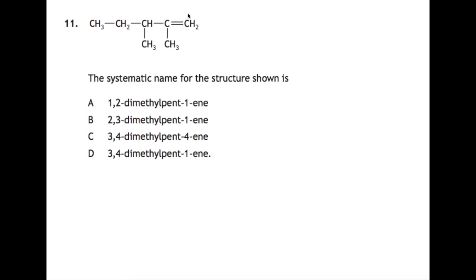So you want to number your chain from the end closest to the double bond. So we have 1, 2, 3, 4, 5 carbons in the longest chain. So this would be pent 1-ene if there was nothing attached to it. But you have these two groups here attached and they are both methyl groups. There are two of them and they're on carbons 2 and 3. So this goes at the start of the name. So you have 2,3-dimethylpent-1-ene. So if we have a look at the answers it would be B.